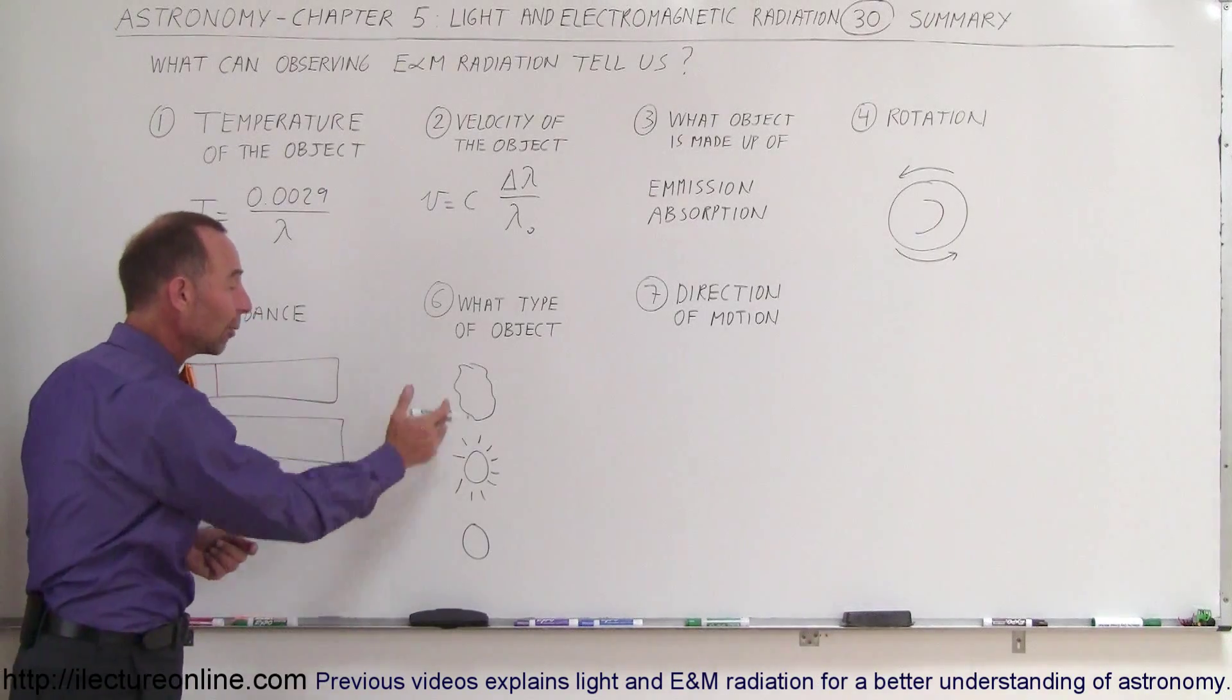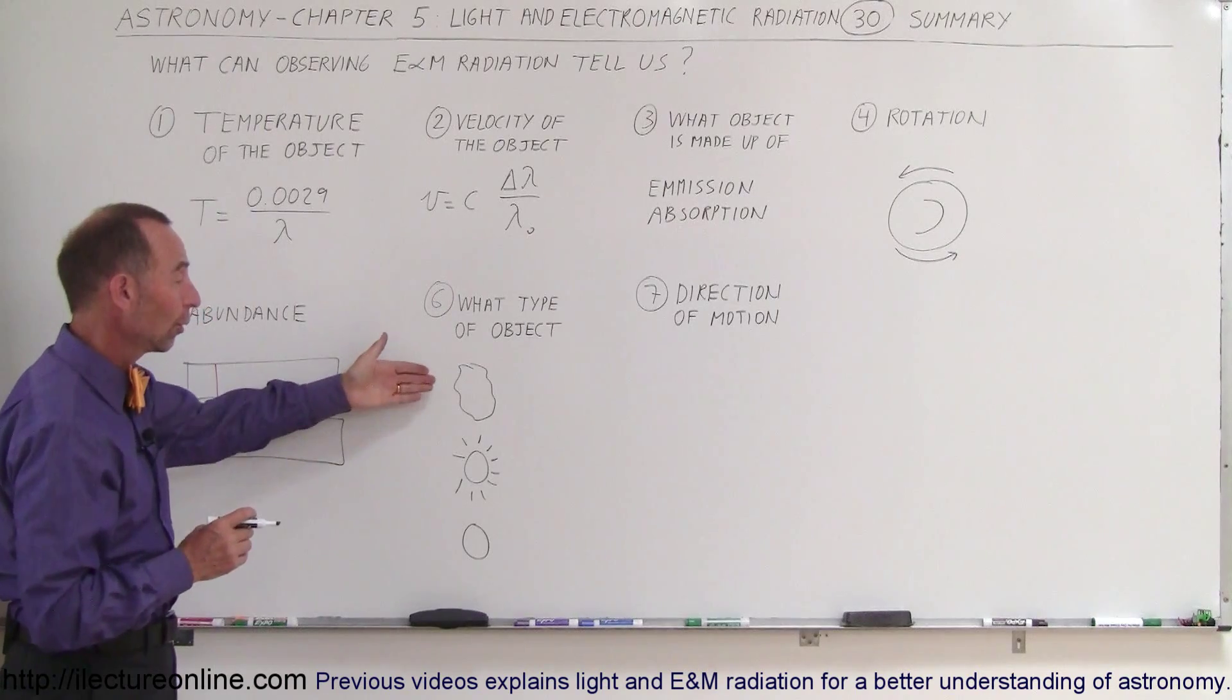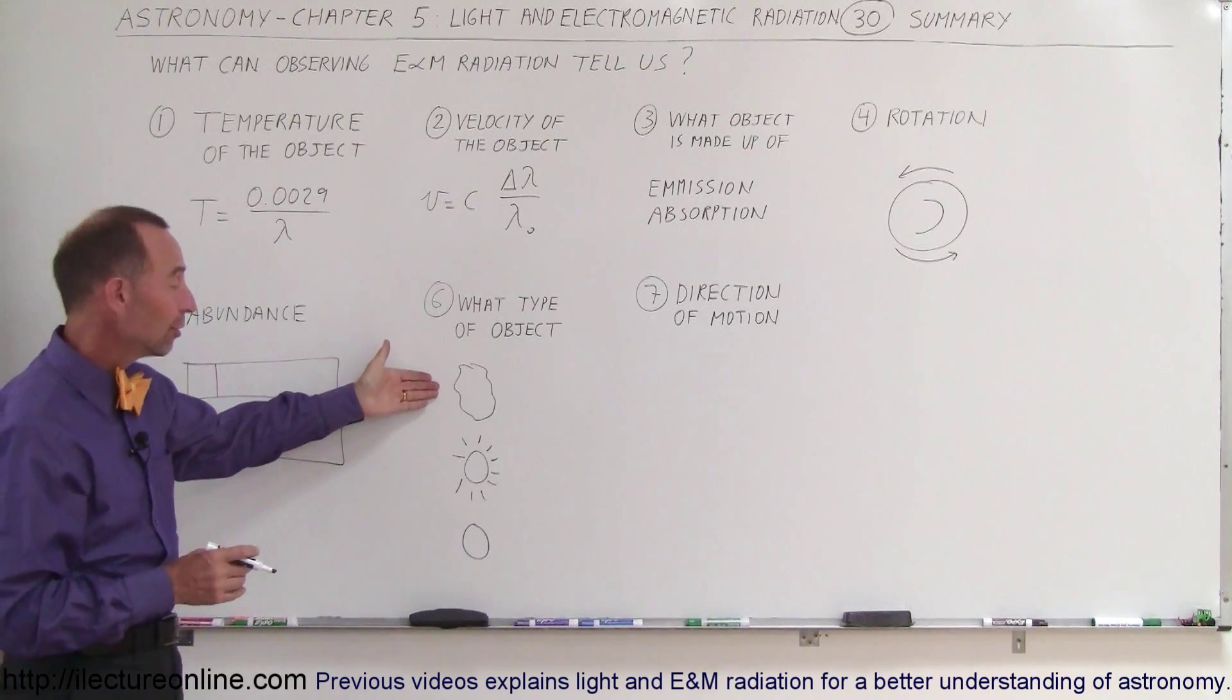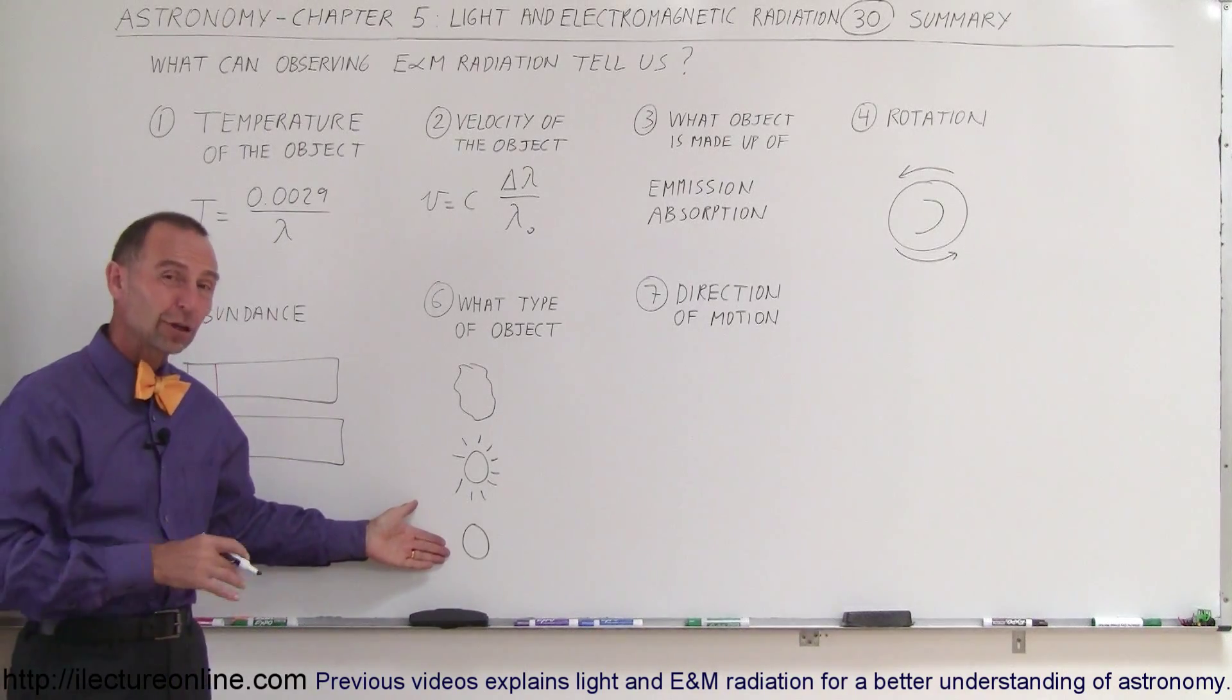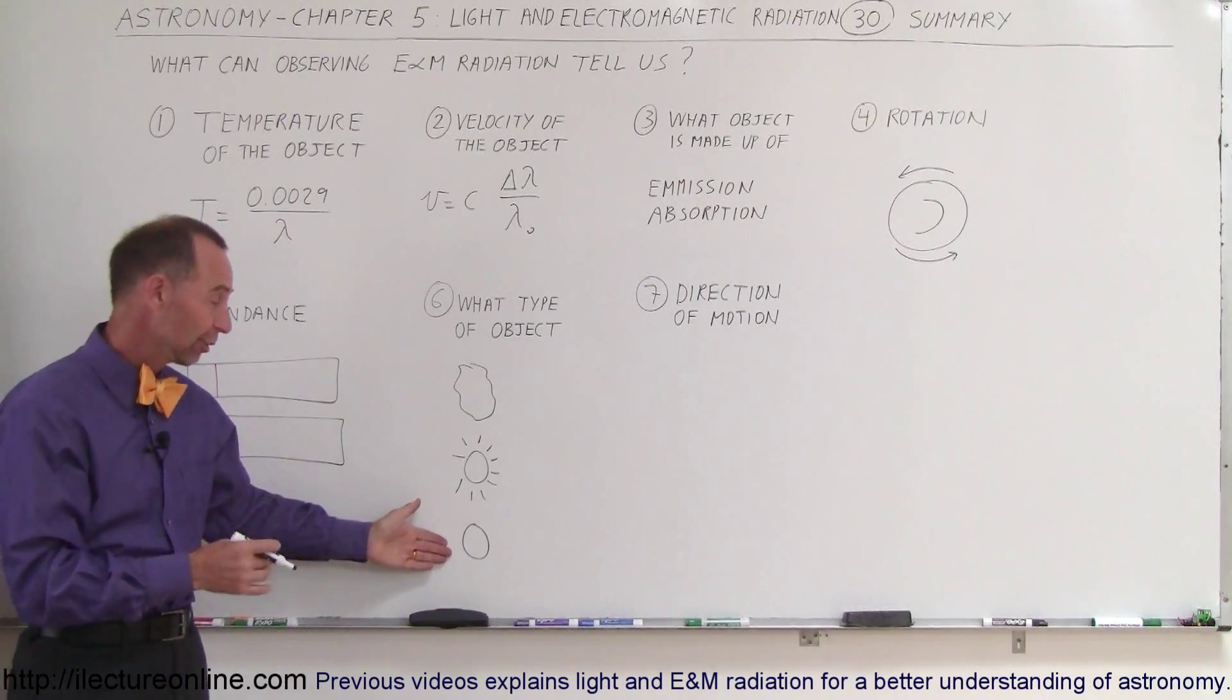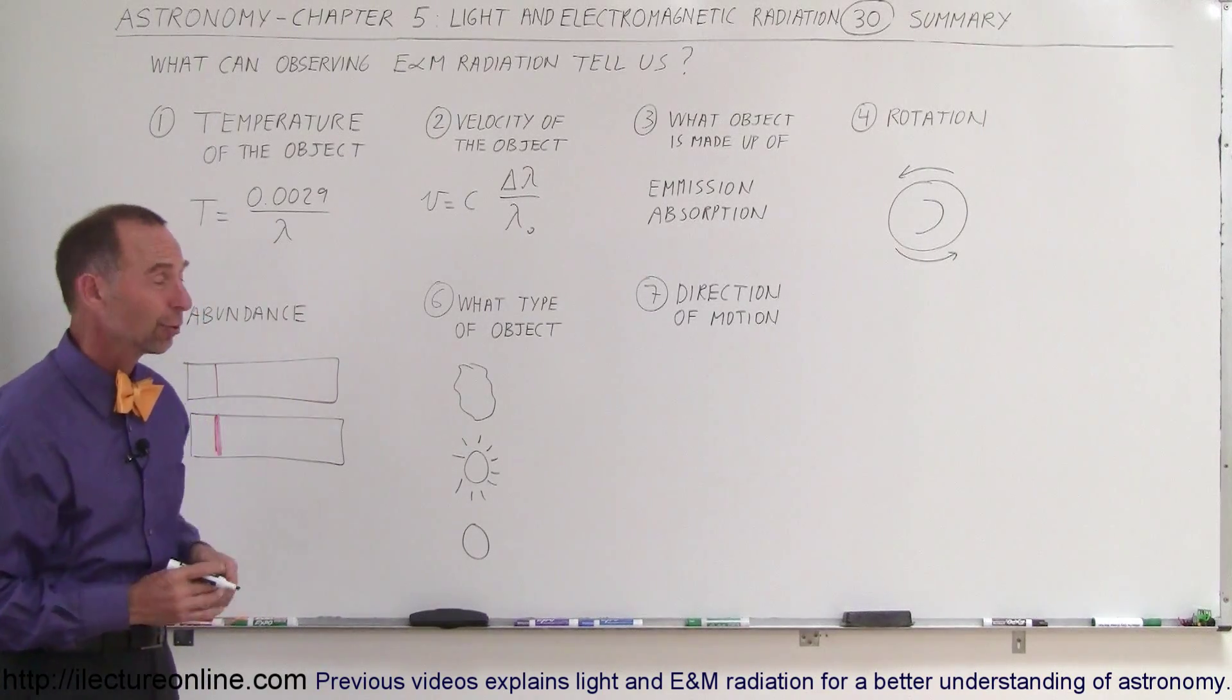The type of radiation that we get will come from different elements. So, typically, nebulas give you an emission spectrum. Stars will give you an absorption spectrum. Planets will either give you a continuous spectrum, if there's no atmosphere, or an absorption spectrum, if there's an atmosphere. But we can usually tell the difference between them.